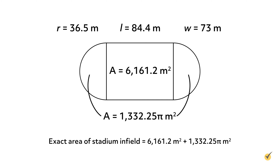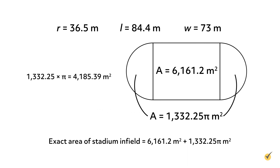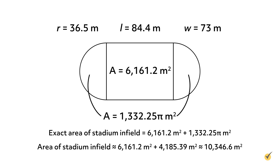While exact, this answer wouldn't be decipherable by most people, so it makes sense to write it as an approximation. We find the approximate area of our two semicircles by multiplying 1,332.25 by pi on our calculators, to find 4,185.39 square meters. So the approximate area of our stadium is 6,161.2 square meters plus 4,185.39 square meters. This is equal to approximately 10,346.6 square meters. Once again, we use the approximately equal to symbol because our semicircle areas are now an approximation. That's it for finding the area of composite shapes made of circles and rectangles. Thanks for watching and happy studying!